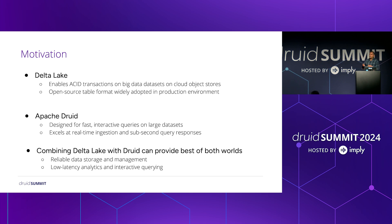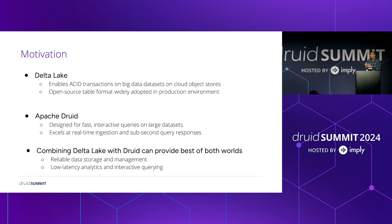But this created problems when you are updating the table and also while trying to read it. When you are updating the table, you may have written some partial data that gets visible to the readers, creating incorrect data. With the ACID transaction capability enabled by Delta Lake, you can atomically update the table so you don't see partial or incorrect data. This basically ensures the reliability of data lakes.